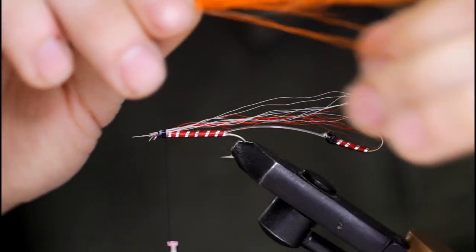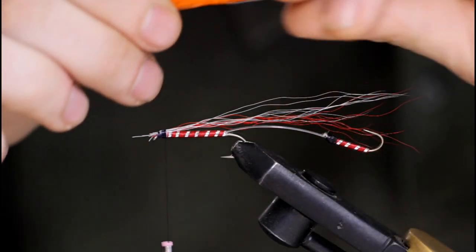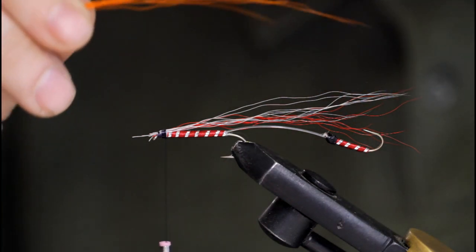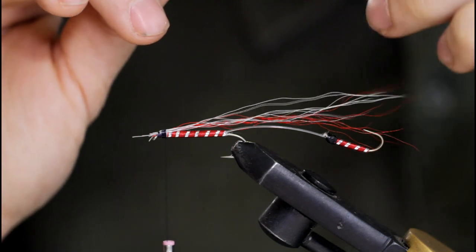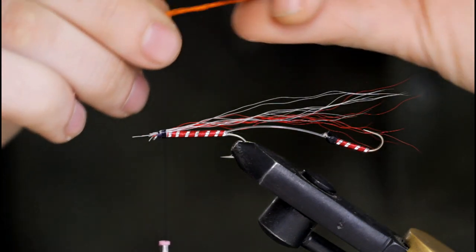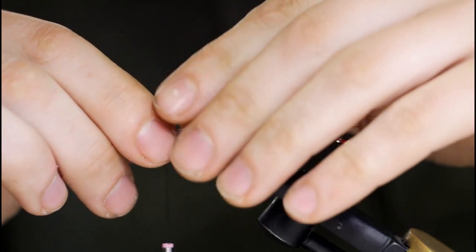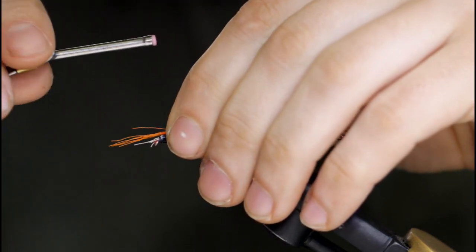All right, time for the next color of hair. So I've got some orange bucktail here, I just pulled out a lot of short fibers. All right, so I've got this sparse clump, looks good. I'm going to set it on top, loose wraps forward.